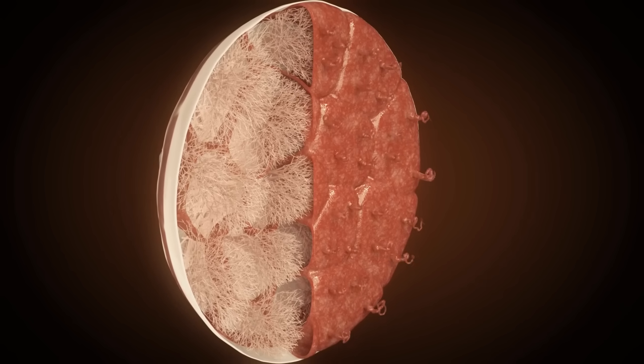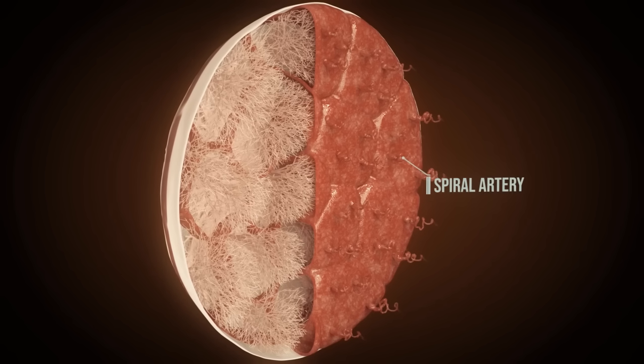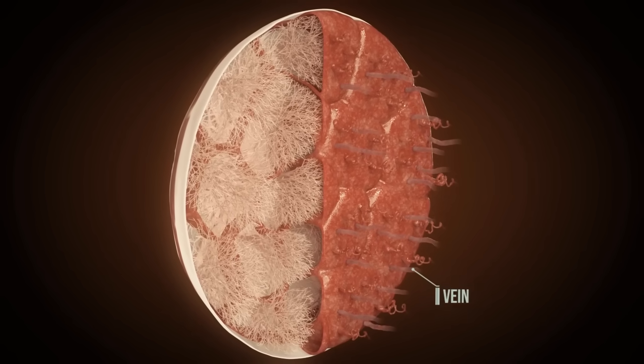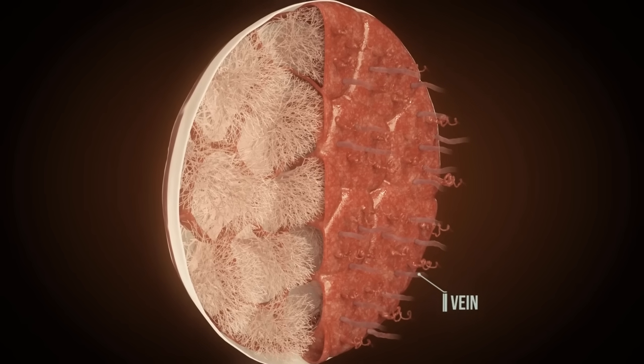Maternal blood, rich in oxygen and nutrients, enters the intervillus space via the arteries. Veins carry away the oxygen and nutrient-poor blood.